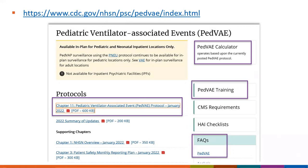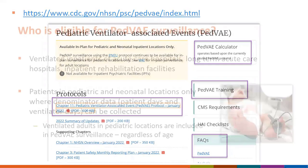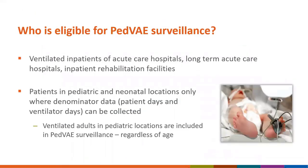Who is eligible for PVAE surveillance? Ventilated patients in acute care hospitals, long-term acute care hospitals, and inpatient rehabilitation facilities are eligible, provided they are in a pediatric or neonatal location where you can collect denominator data — patient days and ventilator days. Adults housed in a pediatric location would also be included, because surveillance is location-based. Similarly, if you have a child in an adult location, they would be included in adult VAE surveillance, not PVAE.